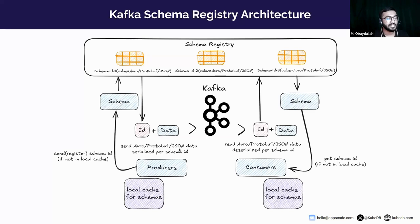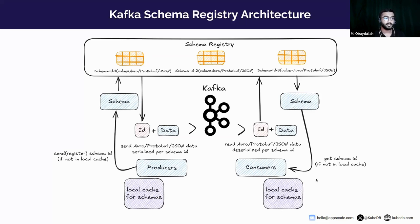What is serialization? Serialization is something that converts your message into a byte stream. So the producer serializes the data with the schema and produces the byte stream into Kafka. After that, when a consumer wants to consume that message with a schema, the consumer will request from Kafka and specify it wants to consume the message with the schema.